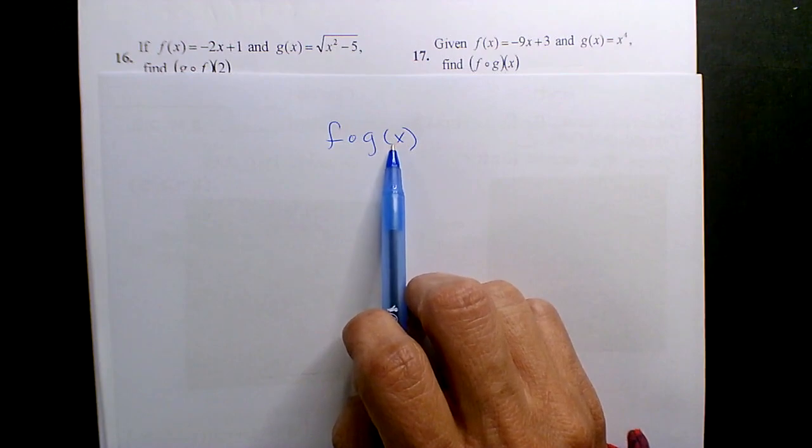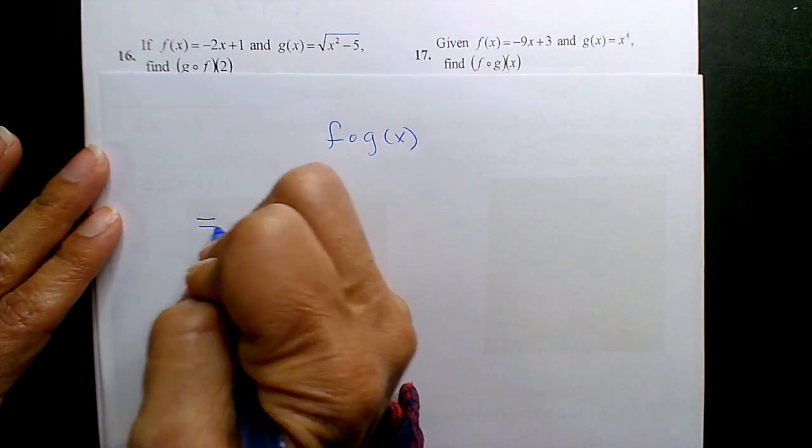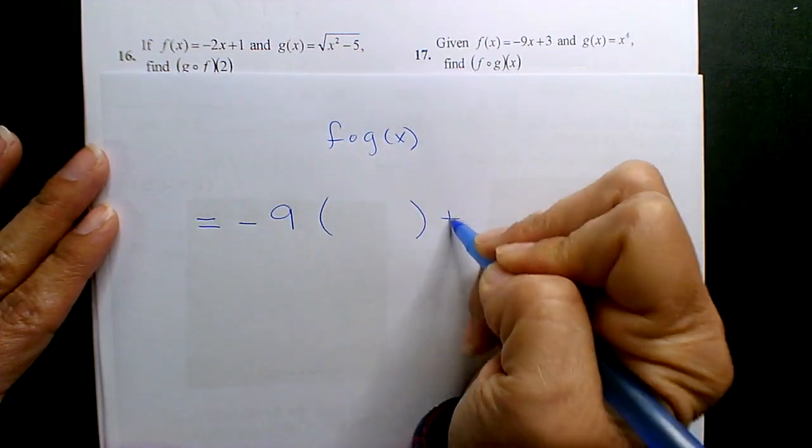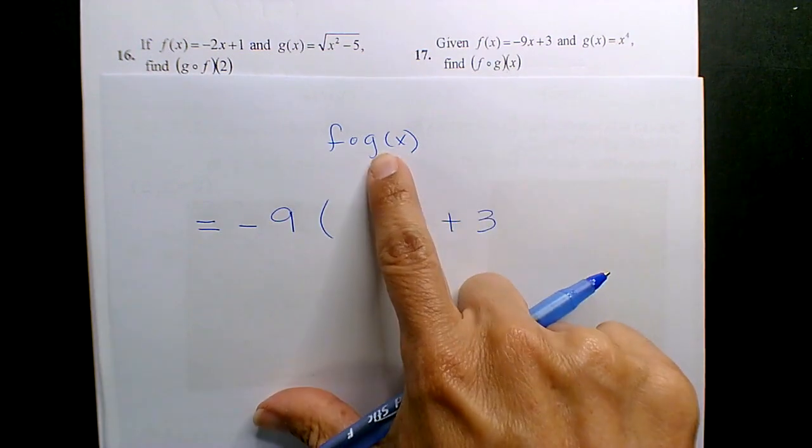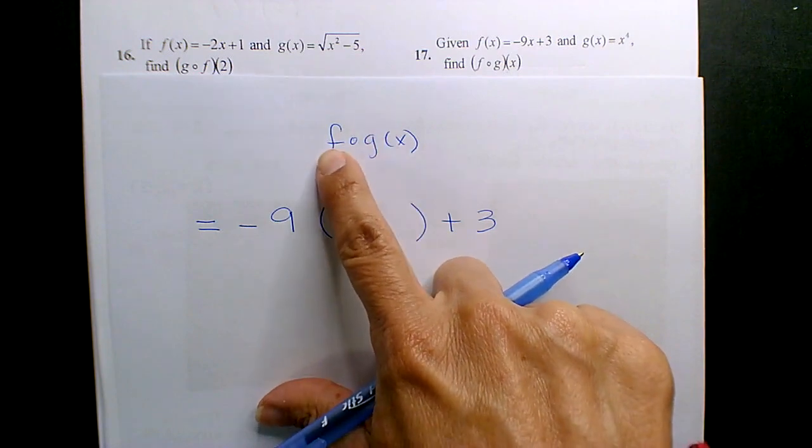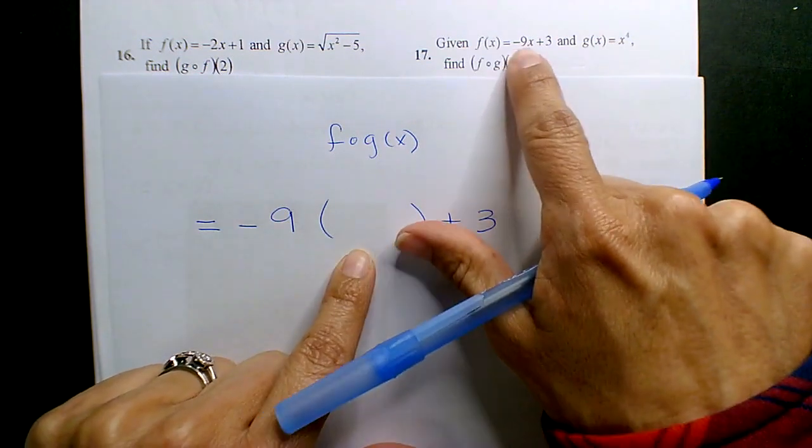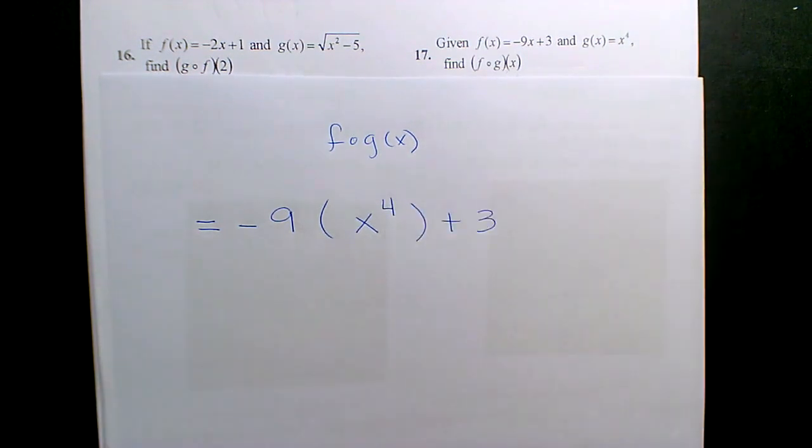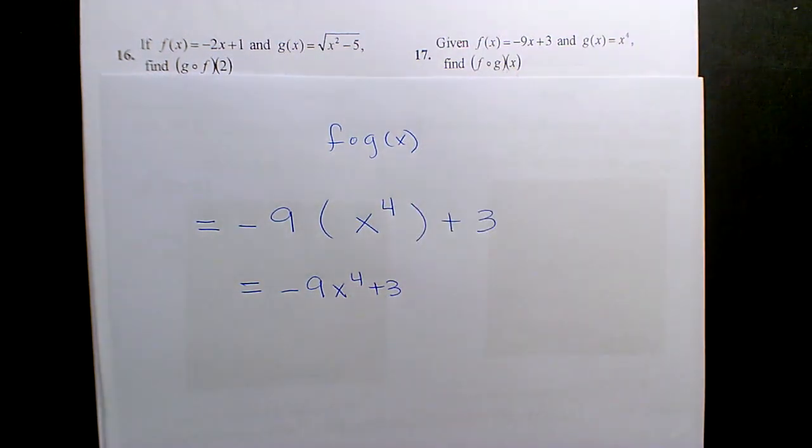So the initial F function is negative 9X plus 3. And you're going to substitute the G function everywhere you see an X in the F function. That's substitution. And so G of X is X to the 4th, and so an X to the 4th gets placed in that empty space. And so what do you get? Negative 9X to the 4th plus 3, and that's your F of G of X.